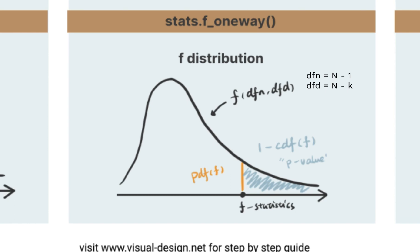To easily get the f-statistics and p-value using Python, we can use the function f_oneway.